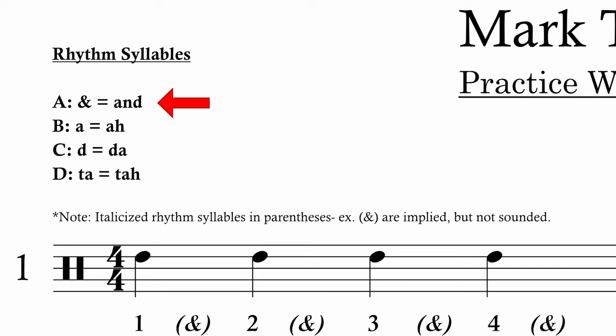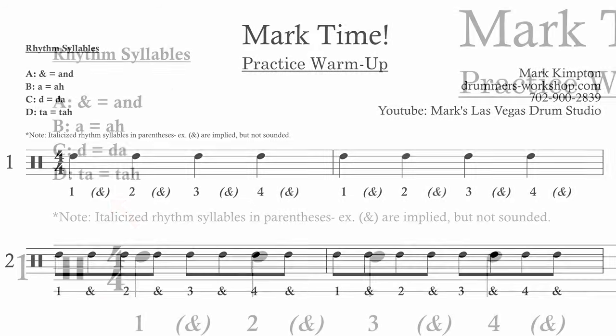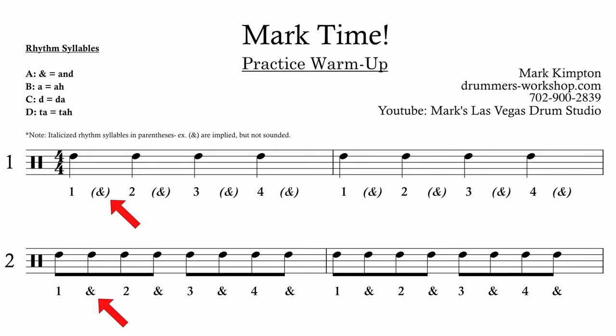AND equals AND — A-N-D. When you see the AND marking, which is on the first and second line for the quarter and the eighth notes, you're going to say the quarter and the eighth note: one AND, two AND, three AND, four AND. Okay, that's the first one.